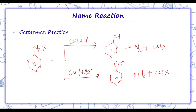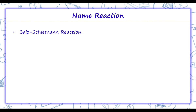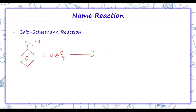In Balz-Schiemann reaction, benzene diazonium chloride is treated with fluoroboric acid. We get arene diazonium fluoroborate which is precipitated, and then on heating it decomposes to form aryl fluoride. This reaction is basically for the preparation of fluorobenzene.